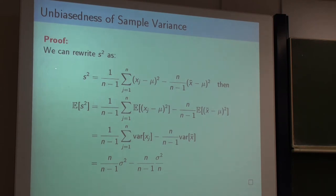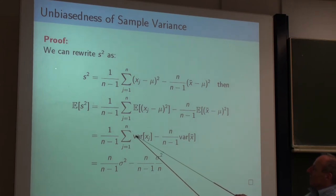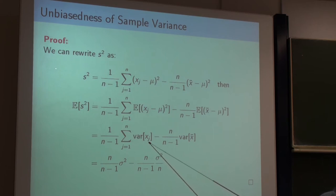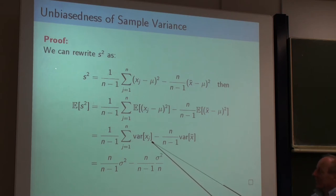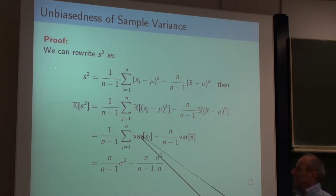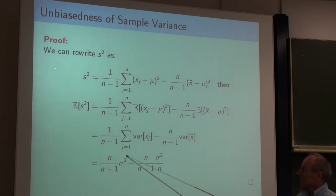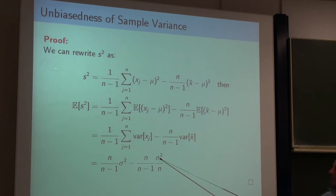The variance of x_j is the same for all our variables x_j, because we assume we draw them independently from an identical distribution. So the variance for all these variables is the same — we can take this constant value of the variance, which is sigma squared, and we get n times sigma squared. And here we have the variance of the mean. We already know from the central limit theorem that the variance of the mean is sigma squared over n.